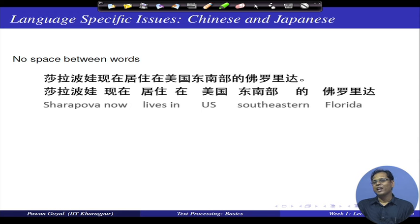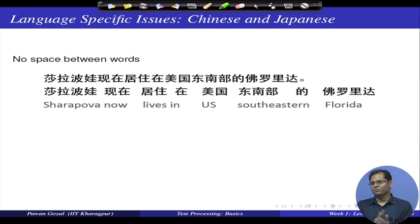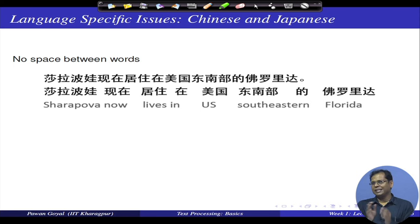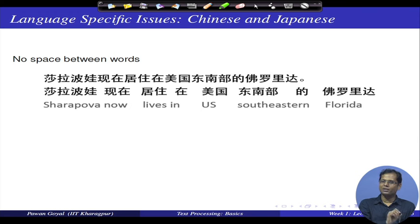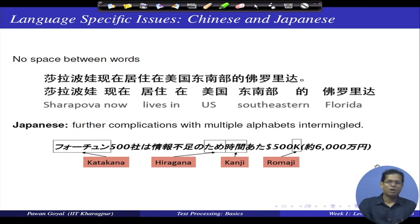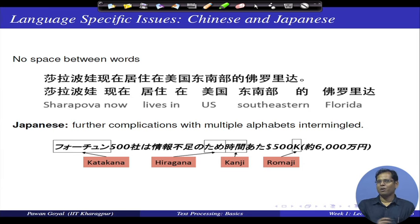In Chinese and Japanese, words are written without spaces between them. For a given sequence of characters, there may be more than one valid way to break them into words. This makes word tokenization difficult. Japanese adds further complications by using four different scripts: katakana, hiragana, kanji, and romaji, making the segmentation problem more severe.